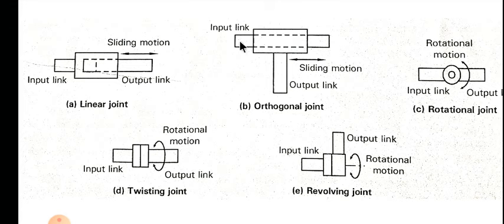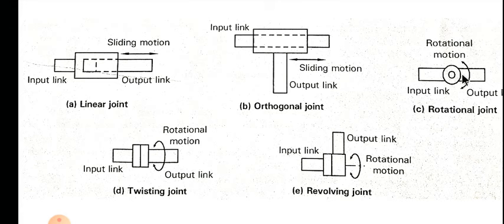The third one is a rotational joint. This type provides rotational relative motion of the joint, with the axis of rotation perpendicular to the axis of both the input and output links. You can see that it provides rotational relative motion to both input and output, perpendicular to both links. These types of joints are called R joints. The next one is a twisting joint, which involves rotary motion.